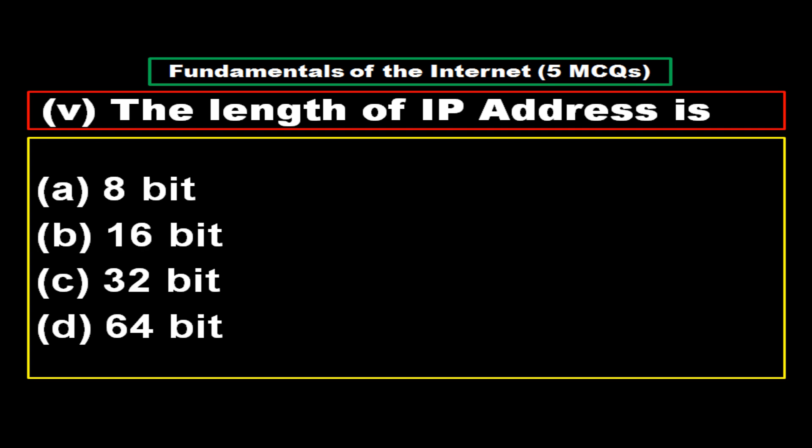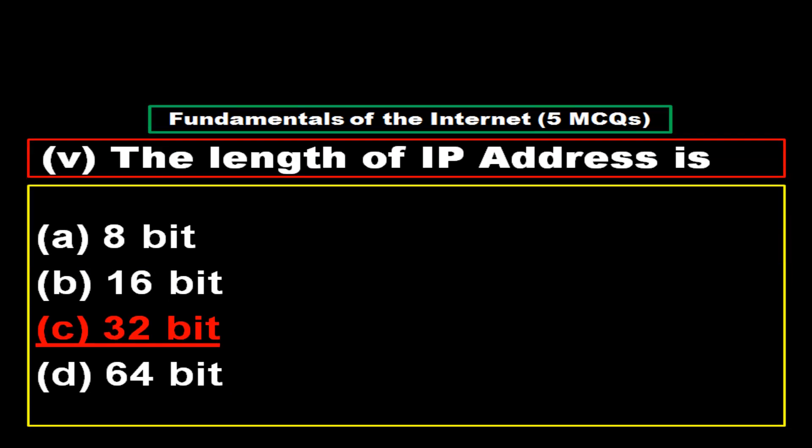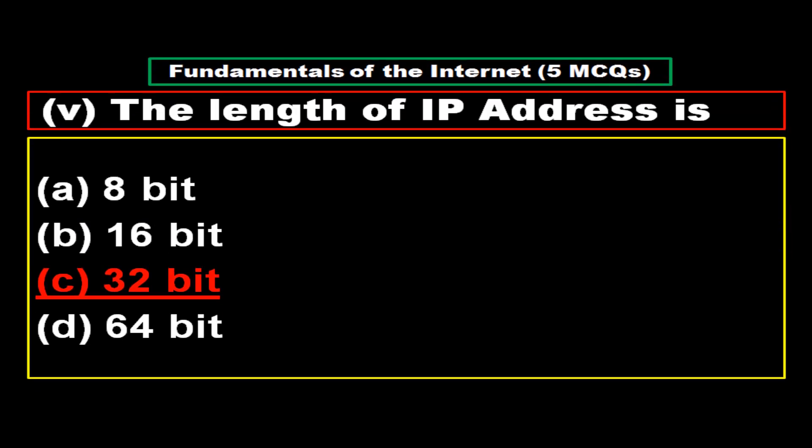Question 5: The length of an IP address is — option A: 8 bit, option B: 16 bit, option C: 32 bit, option D: 64 bit. The right answer is option C, 32 bit.